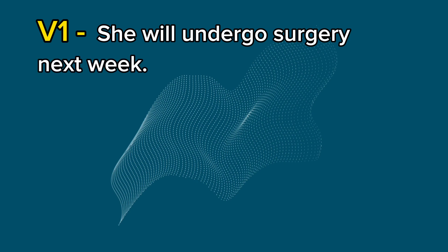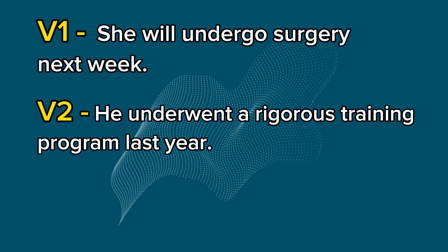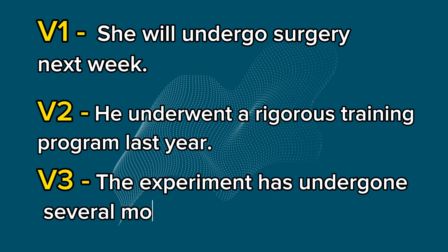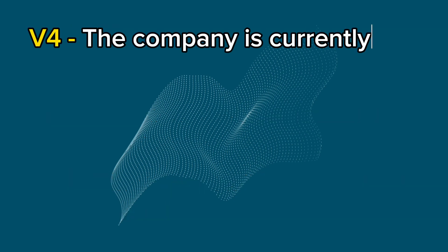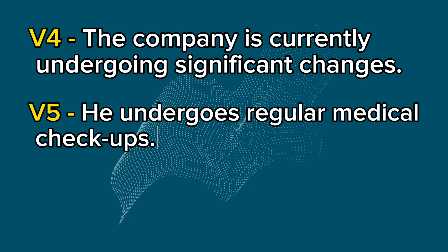For example sentences: V1 — She will undergo surgery next week. V2 — He underwent a rigorous training program last year. V3 — The experiment has undergone several modifications. V4 — The company is currently undergoing significant changes. V5 — He undergoes regular medical checkups.